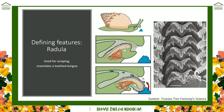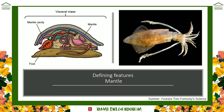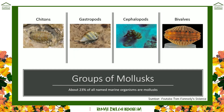The radula is a defining character, but the bivalves have lost theirs over evolutionary time. Of course the main thing is they all have a mantle — this is like the visceral mass. Think 'viscera' — a visceral feeling is basically your gut feeling. So they've got this large visceral mass, this large cavity that has all their guts in it, and they can do gas exchange and respiration across that mantle.